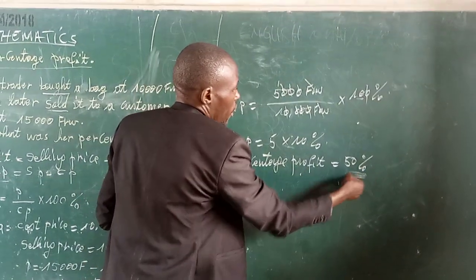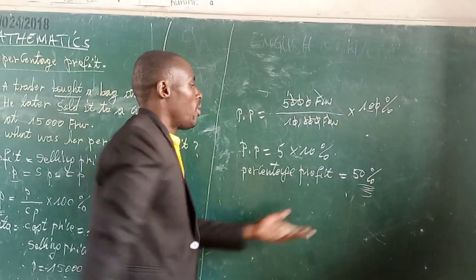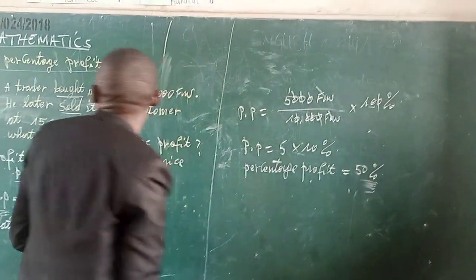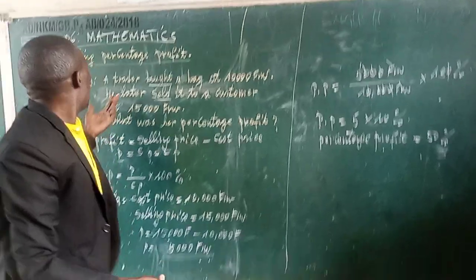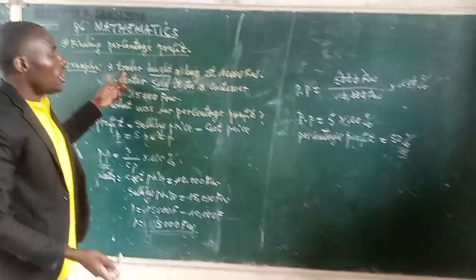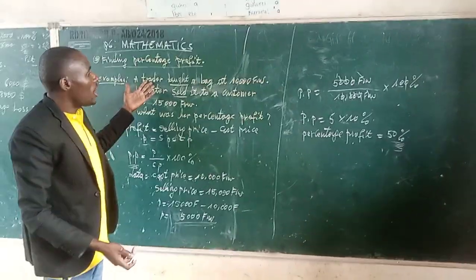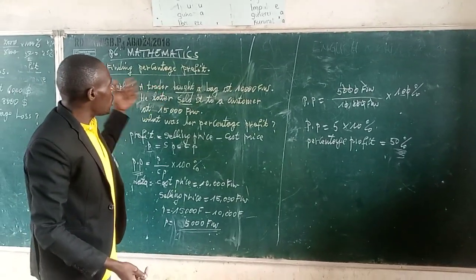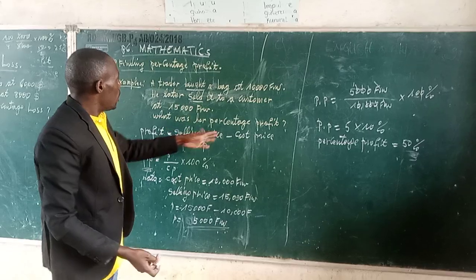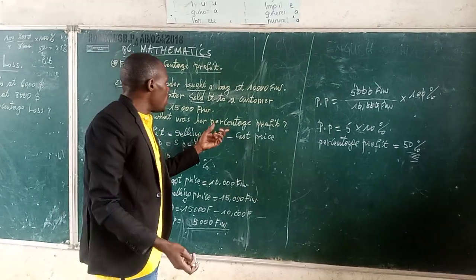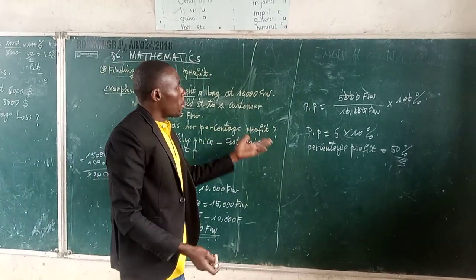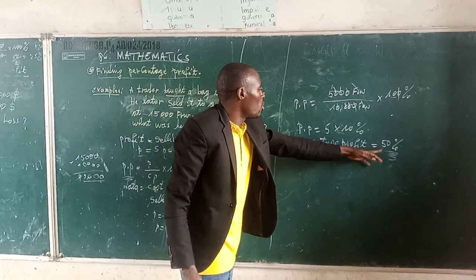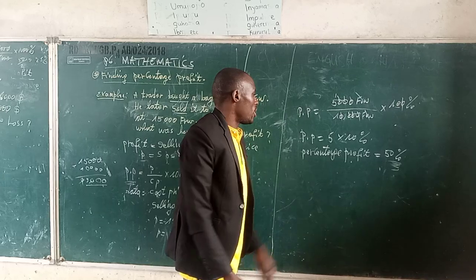Percentage profit is equal to five times ten, which is equal to fifty percent. Wait — as stated: percentage profit is equal to five times ten equals fifteen percent. This is the final answer. This means a trader gained a percentage profit equal to fifty percent.